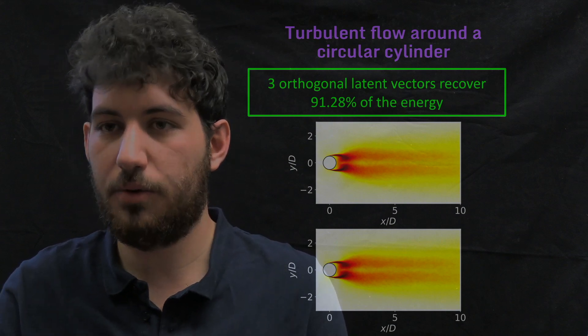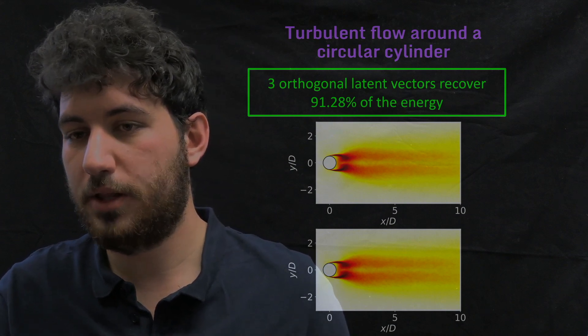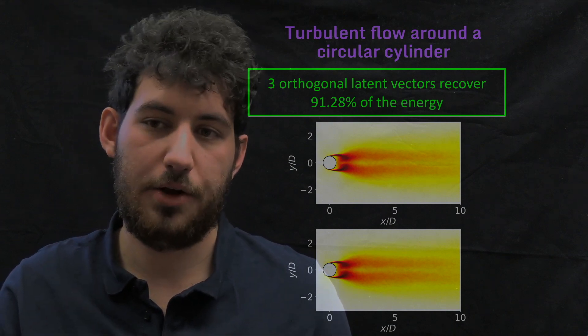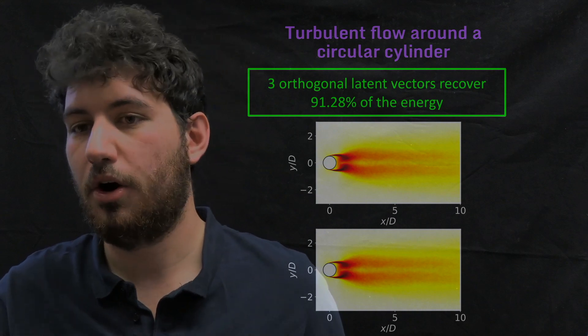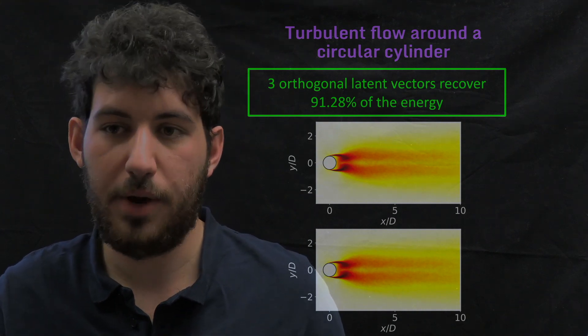And to clarify a bit more that and to quantify it, we just plot that value on a cross streamline right at the beginning of the cylinder wake.